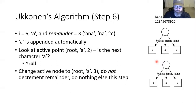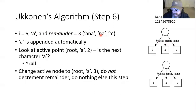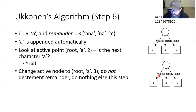Step six: i is 6, remainder becomes 3, character is A. A is automatically appended. Active point is (root, A, 2). Is the next character an A? Yes — same thing again. Active node stays root, active edge stays A, active length becomes 3. We do not decrement remainder.